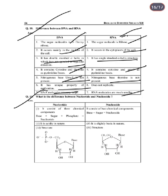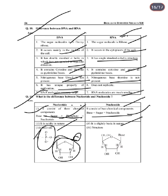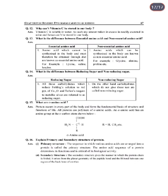Next: Difference between nucleotide and nucleoside. A nucleotide has three components: base, sugar, and phosphate group. A nucleoside has two components: base and sugar only. Nucleotides are acidic in nature; nucleosides are basic in nature.